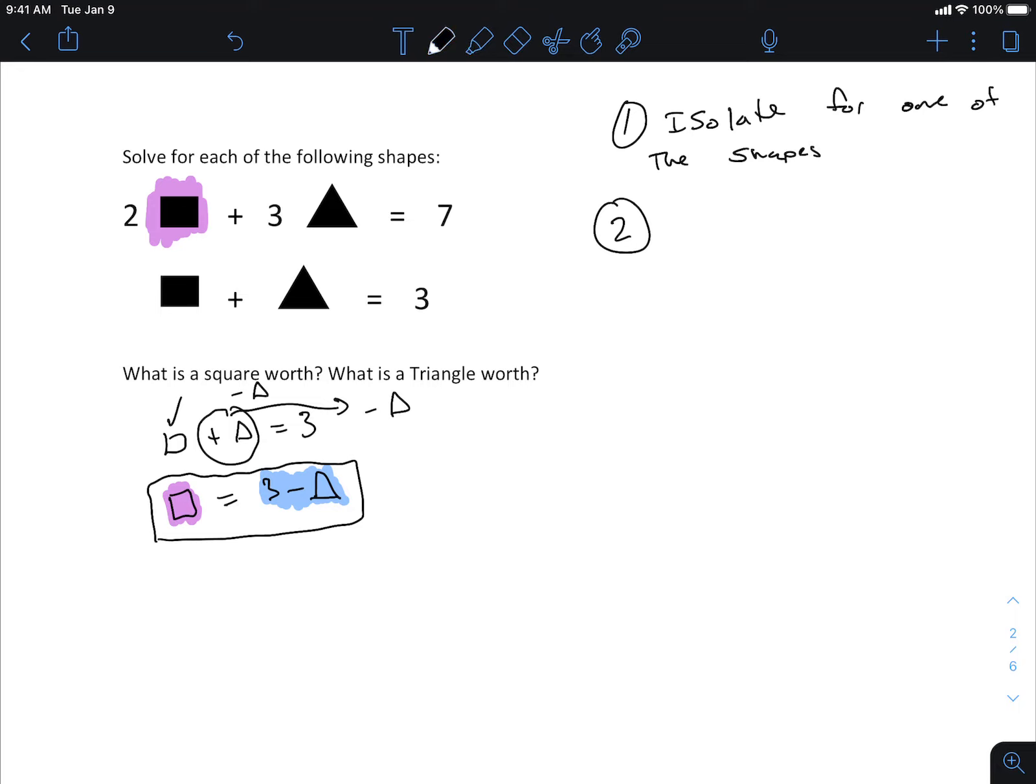So does everybody see the two, I have a purple piece here, two purple pieces, or the squares, I have two squares, and the square is equal to the blue piece, or the 3 minus a triangle. So if it's equal to that, then why can't I replace the square that's up top with the blue, right? So this is what we mean by the word substitute.